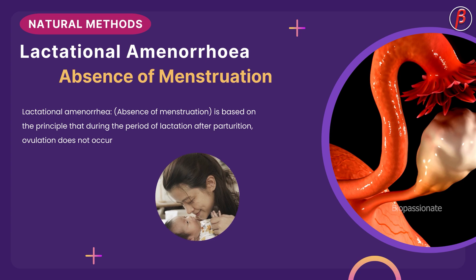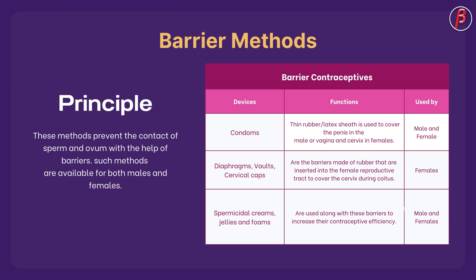Barrier methods prevent the contact of sperm and ovum with the help of barriers. Such methods are available for both males and females. Condoms are thin rubber latex sheaths used to cover the penis in the male, or the vagina and cervix in females. Diaphragms, vaults, and cervical caps are barriers made of rubber that are inserted into the female reproductive tract to cover the cervix during coitus.